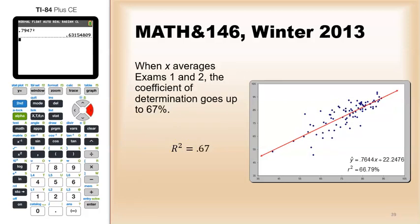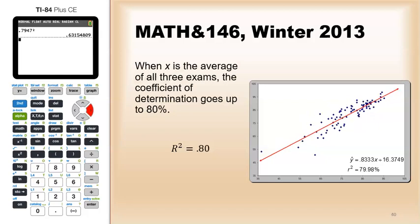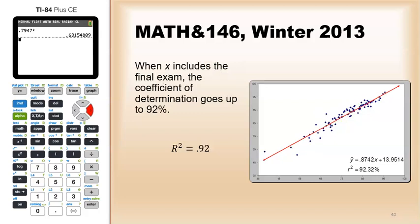Now if I include exam two, so if I take exam one and exam two and average them out and use that to predict the grade, you can see that the coefficient determination is now going up to 67%. And my predictions look, and my graph looks a lot more linear. Now if I take all the average of all three exams, now my correlation coefficient is 80%.